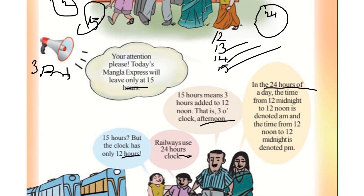In the 24 hours of a day, the time from 12 midnight to 12 noon is denoted as AM, and the time from 12 noon to 12 midnight is denoted as PM.